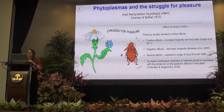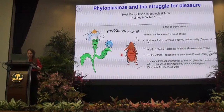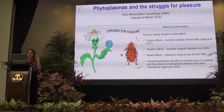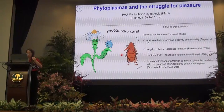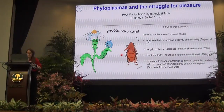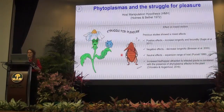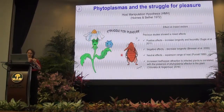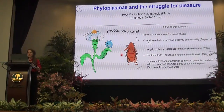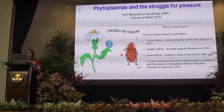For phytoplasma we notice different kinds of mixed effects. Someone documented positive effects on insects like increasing longevity; others documented negative effects or neutral effects. Anyway, there is an increased phytoplasma attraction that was observed and documented towards infected plants, which is not correlated with symptoms per se, but is more correlated with the presence or absence of phytoplasma protein effectors expressed in the plant.